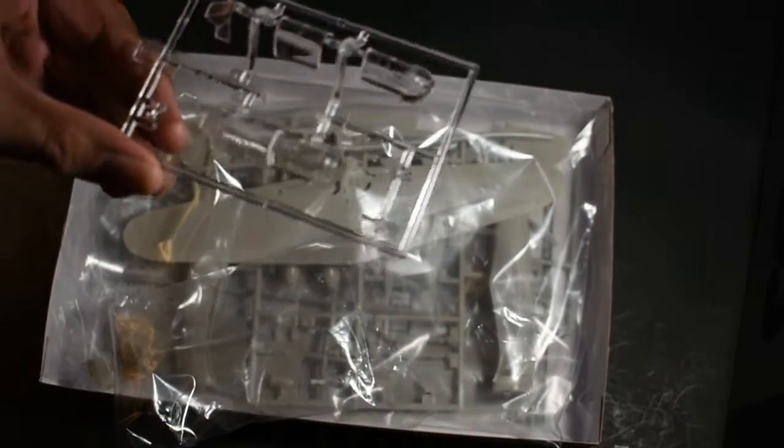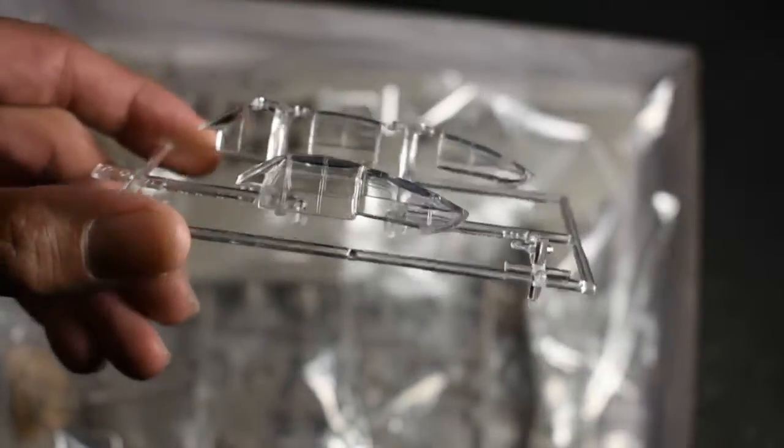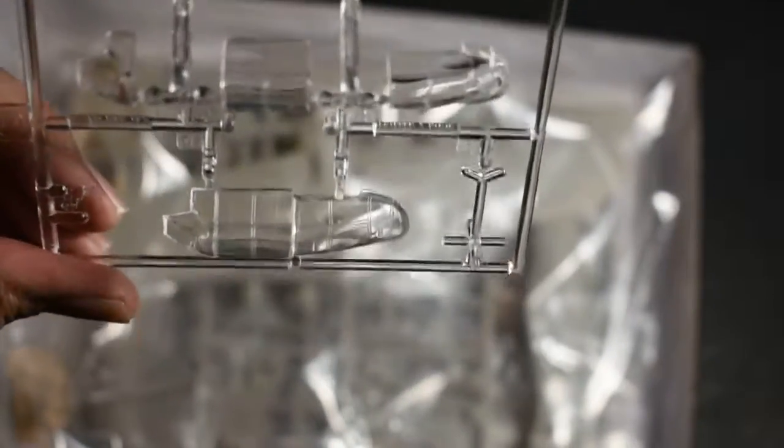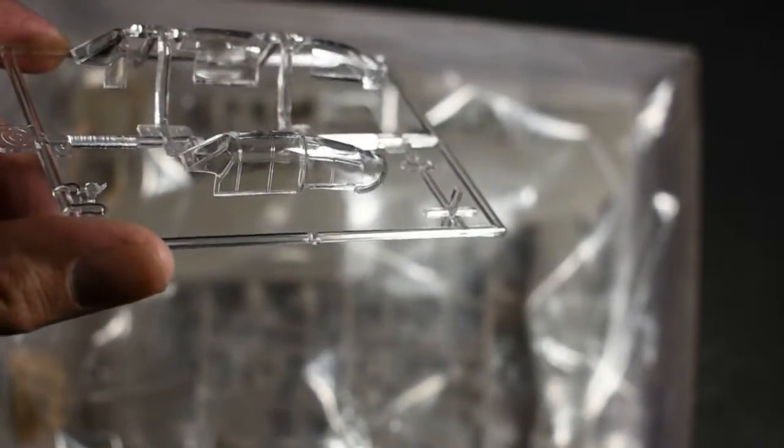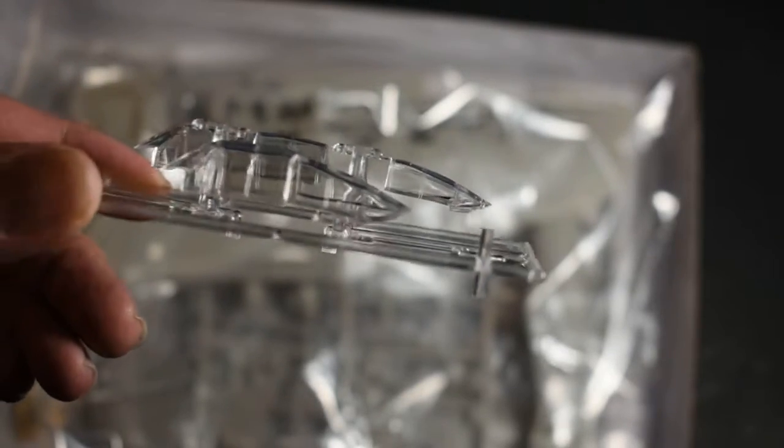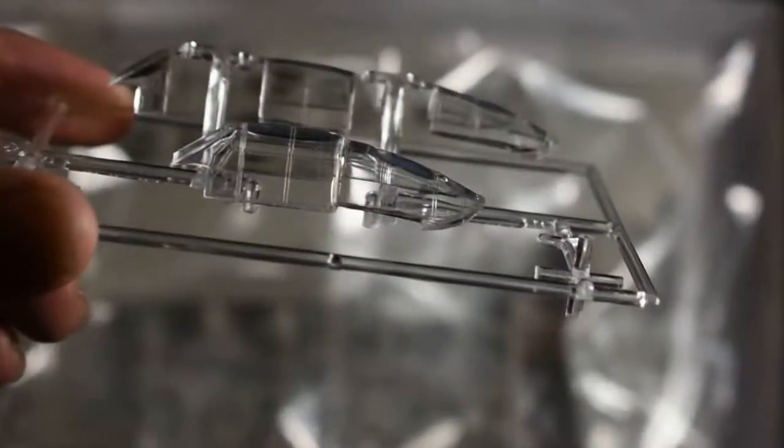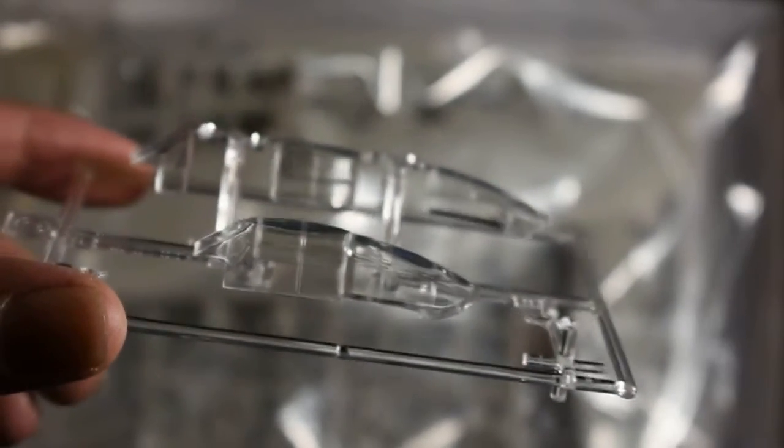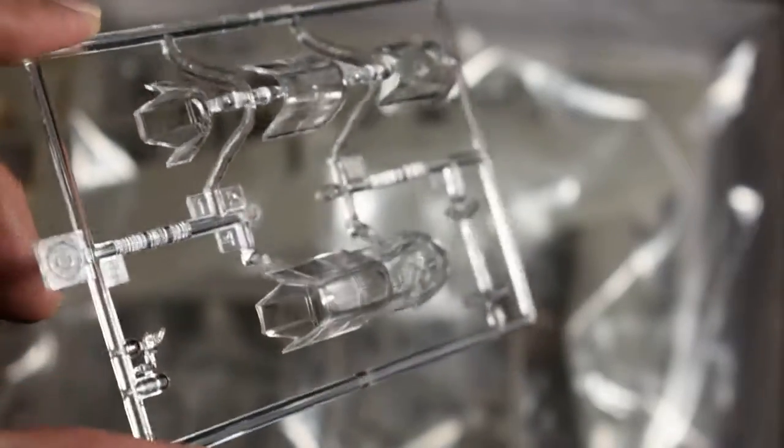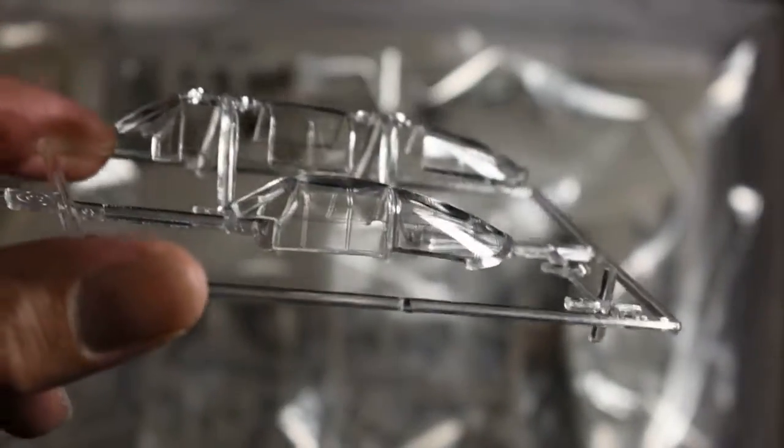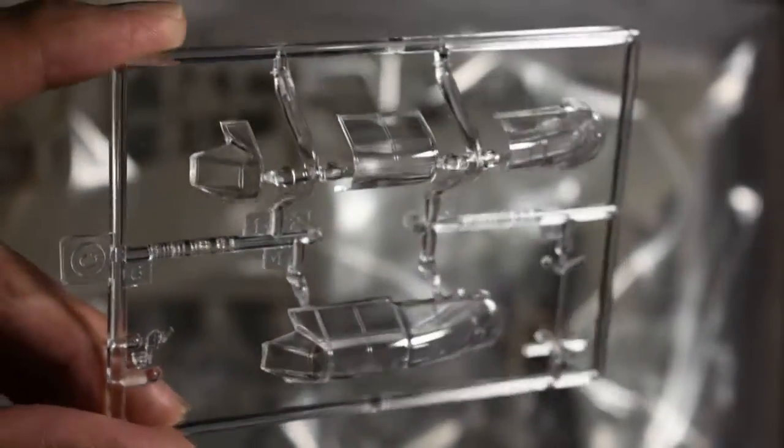We'll start off with the canopies here. Canopies seem to be okay, you can see pretty clear. No flash on the canopies. It does look a little plasticky as far as what I can see from my angle. I'm going to polish that up and see if I can get more of a glass look.